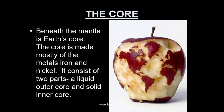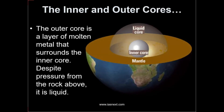Beneath the mantle is the earth's core, made mostly of metals like iron and nickel. The core consists of two parts: outer core and inner core. The core is separated from the mantle by the Gutenberg discontinuity. Because it is composed mainly of iron and nickel, it is also called NIFE — N-I stands for nickel, Fe for iron. The inner core is in a solid state, while the outer core is in a liquid or semi-liquid state. The discontinuity between the upper core and lower core is also called the Lehmann discontinuity.